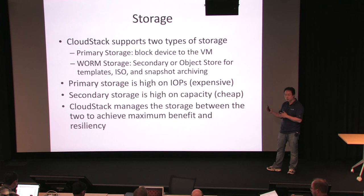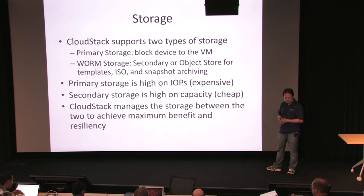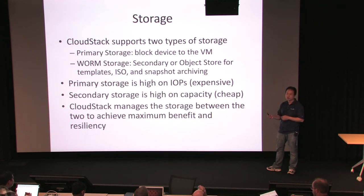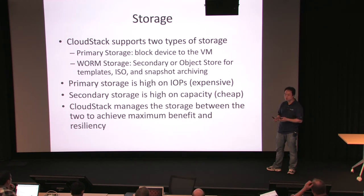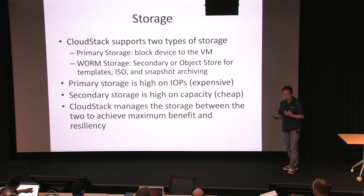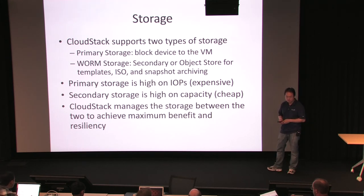We're trying to get to the point where we have object store backing, and we integrated Swift — I'll talk about that a little bit. Secondary storage's biggest characteristic is that you have to be able to add capacity to it, because if you are doing snapshotting and recurring snapshots, the space is going to go up really quickly. CloudStack manages the storage between these two and you have to be able to get the maximum benefit for operators.